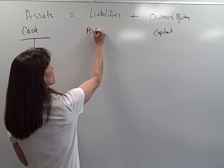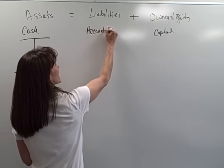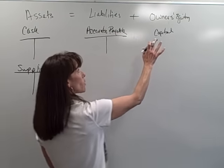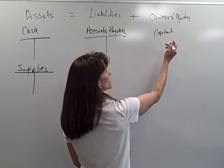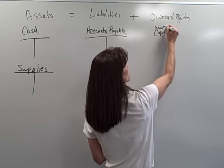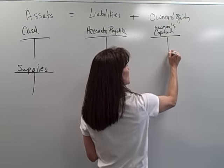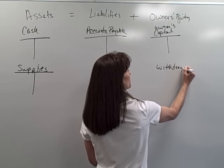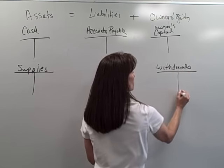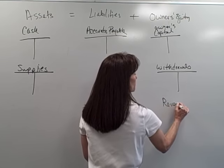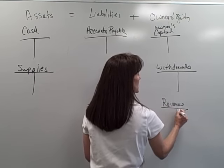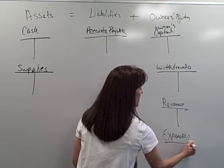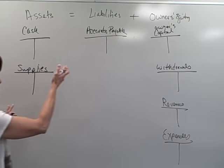Our accounts payable account had a T account. All of our owner equity accounts including the owner's capital account had a T account, our withdrawals account had a T account, etc.